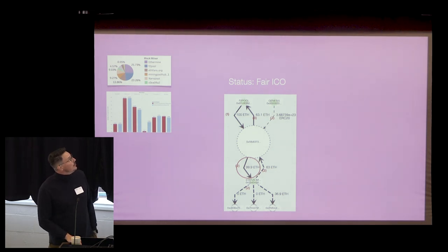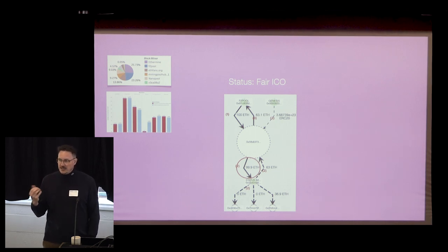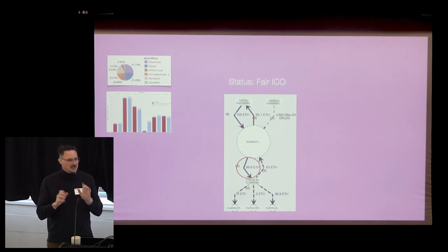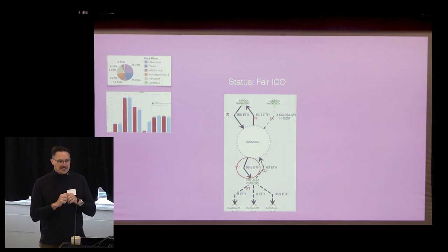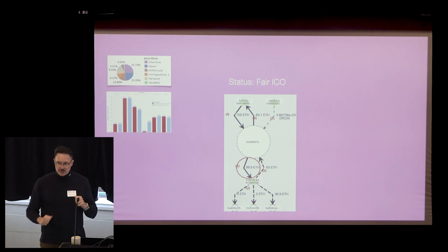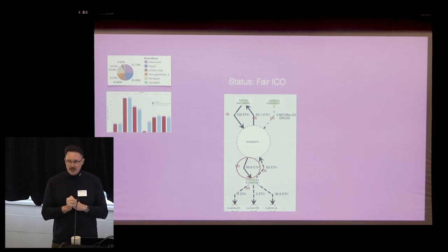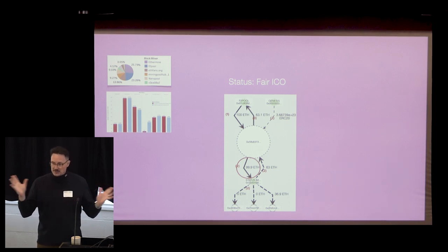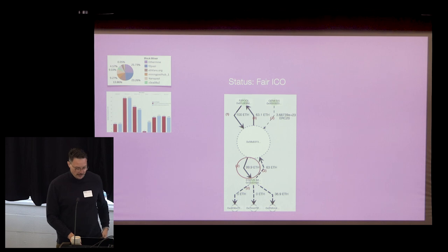We then looked at how we could confirm those 277 successful transactions were F2Pool buying for itself. Blockchain has a reputation for anonymity, but all transactions are linkable. You can trace that they took a pile of money, split it into many small accounts that were each under the purchase cap, and bought tokens from all of those accounts. You can back-trace it to F2Pool itself. That's the basis for our assertion that they were censoring other transactions — not 100% certain, but it's a compelling picture.